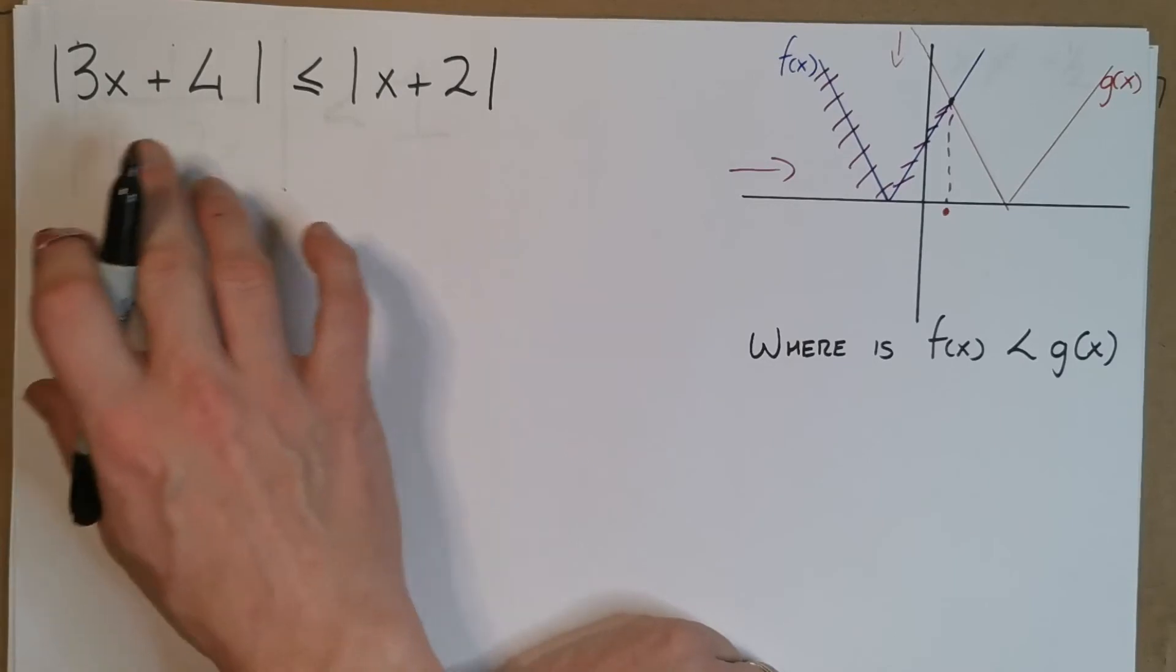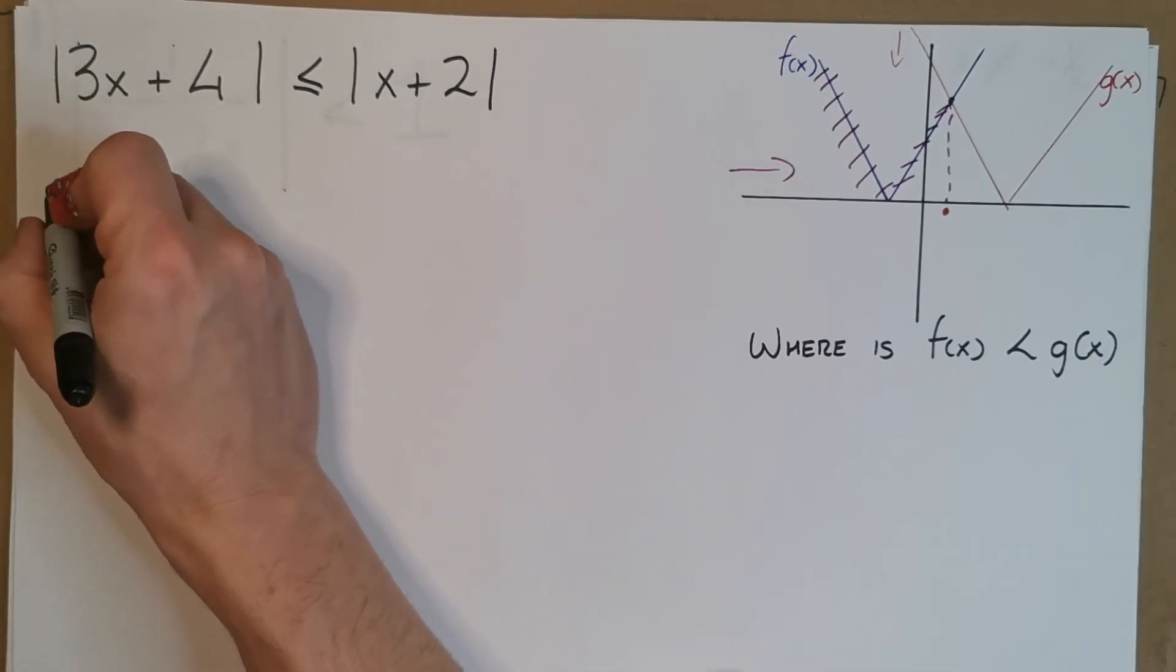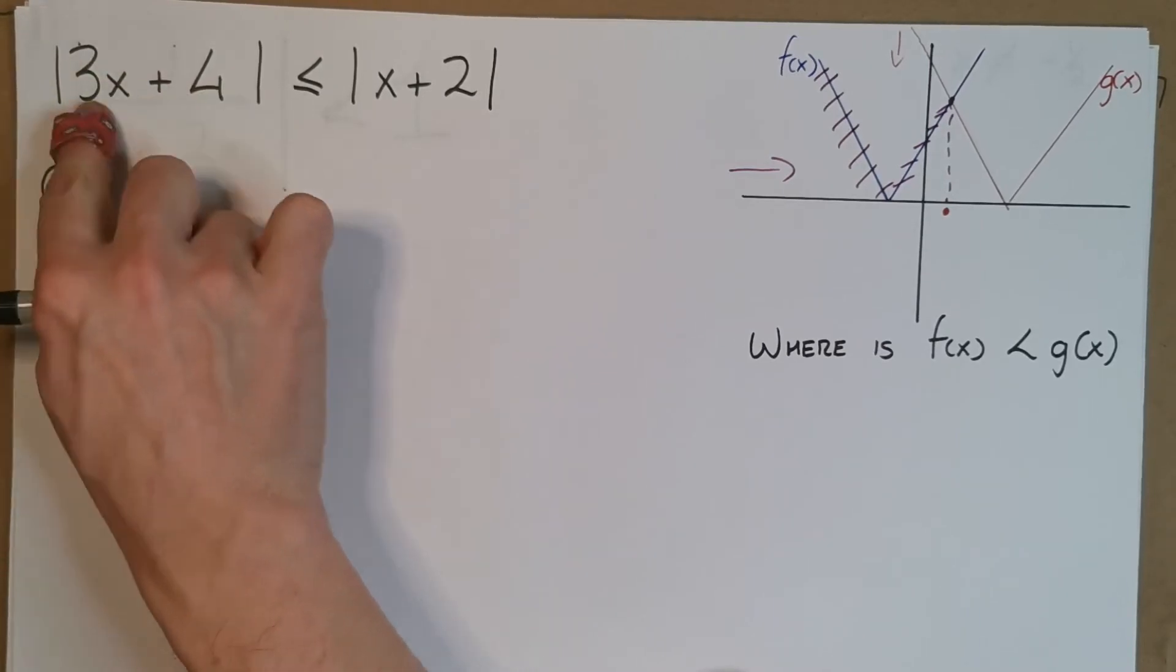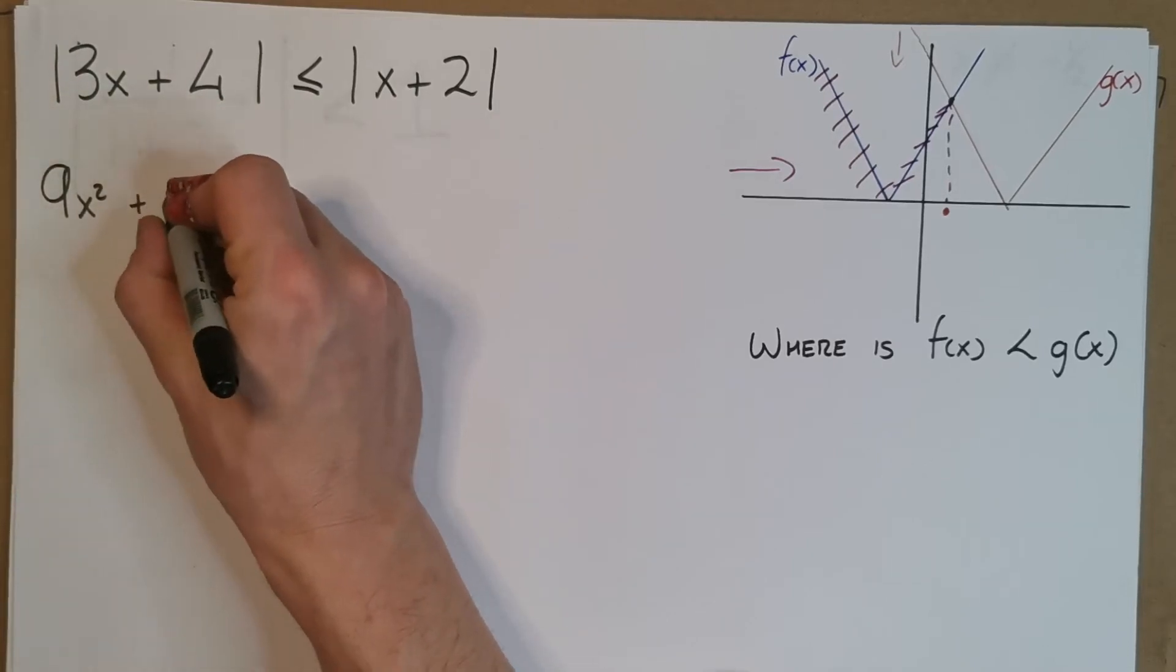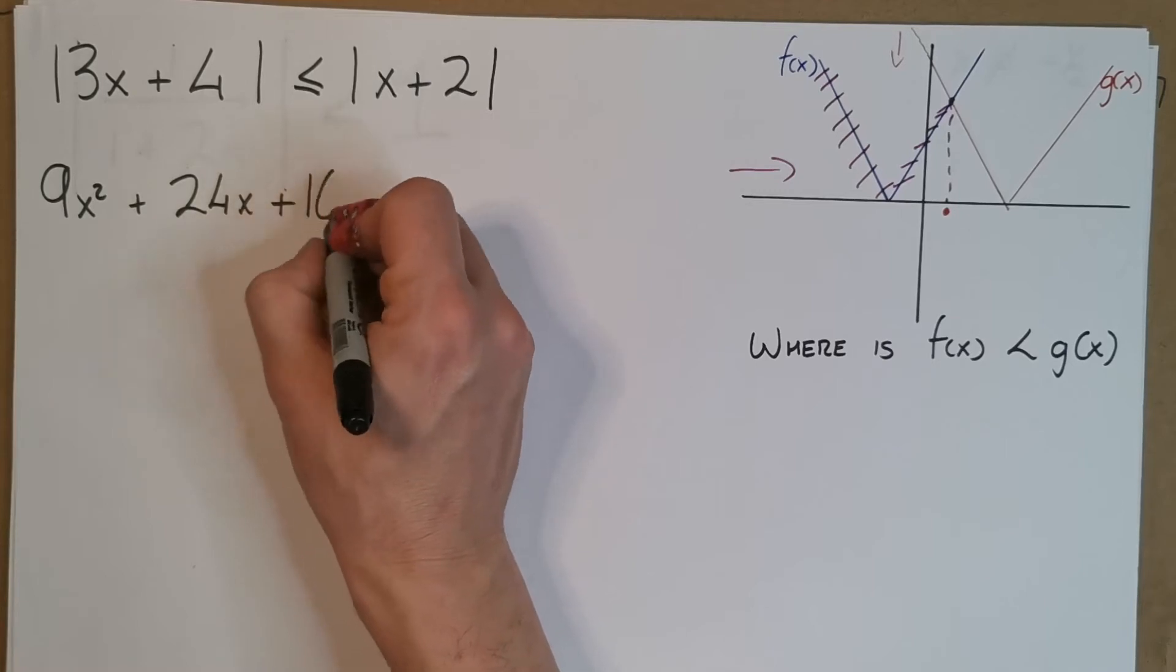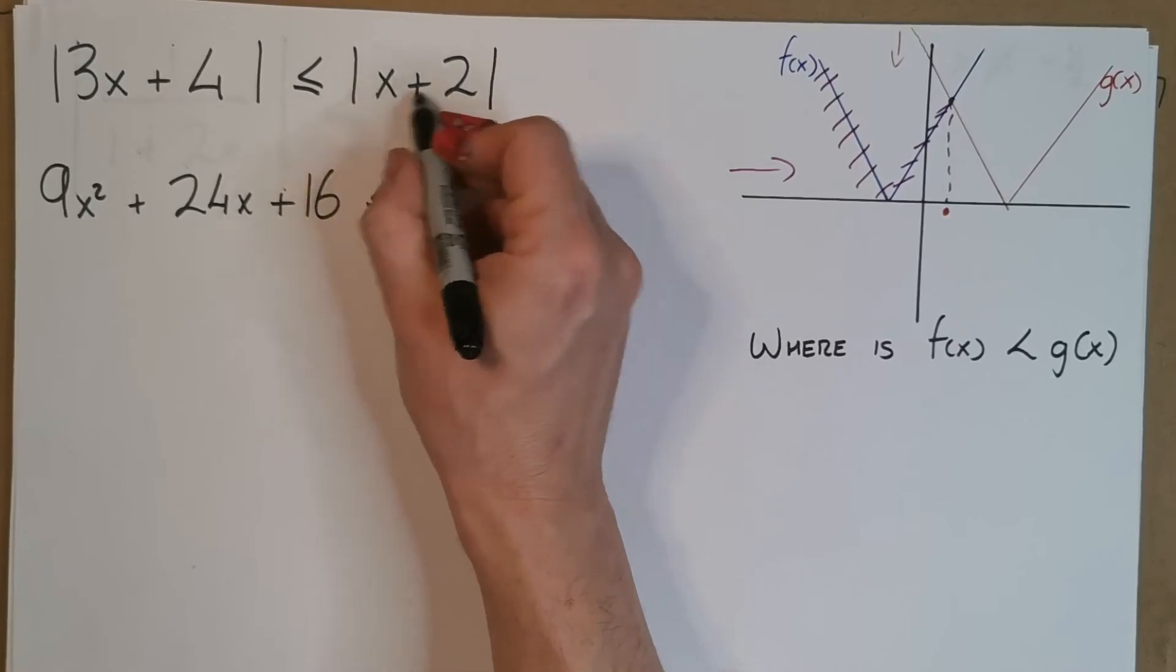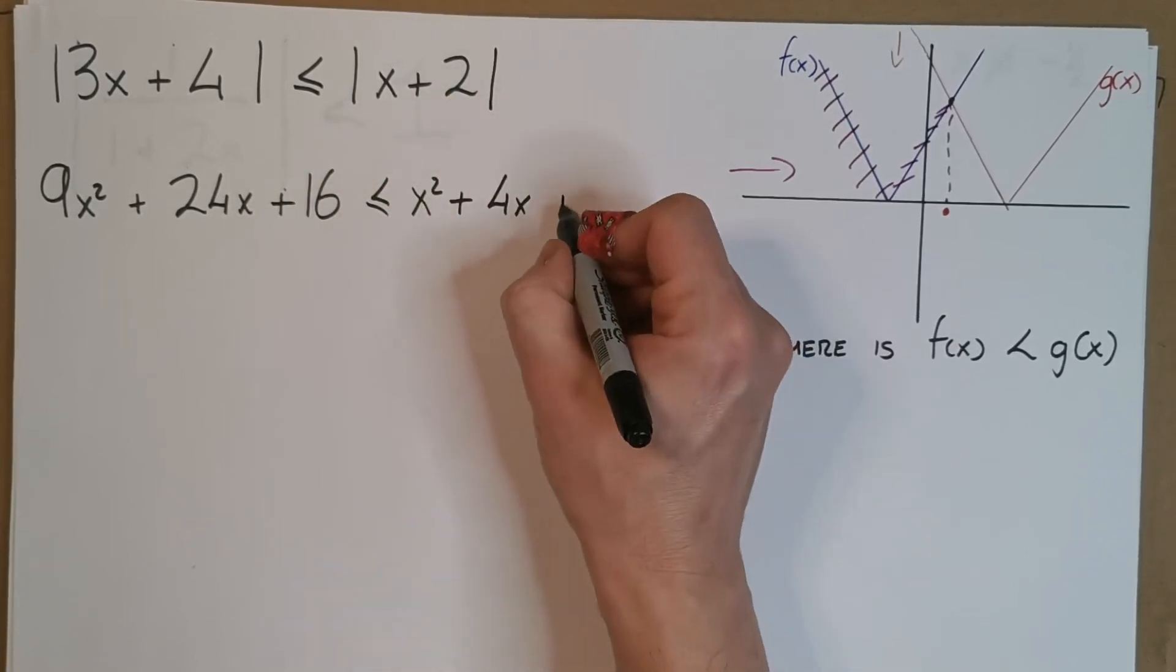We're going to square both sides. To square the left hand side, I square the first part and multiply 2 of them: 3x by 4, that's 12x, I double that, that gives me 24x, square 4 I get 16. Where's that less than or equal to? Same thing here: square the first part x squared, multiply 2, 2x, double that 4x, square the last part, 4.